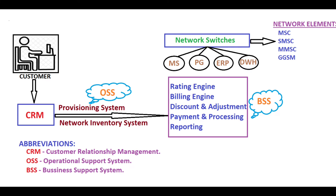The Operational Support System has two parts: one is the Provisioning System and the second is the Network Inventory System. The Provisioning System takes commands from OMS to activate, deactivate, suspend, and terminate any kind of service.